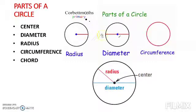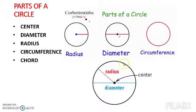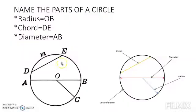A line which passes from the center but touches two points on the circumference — one end and the other end but passing from the center — is called the diameter. Circumference is the outermost boundary. A chord means any line that touches two points on the circumference. The diameter is also the longest chord.